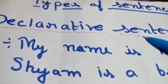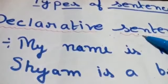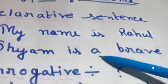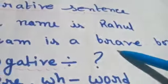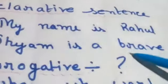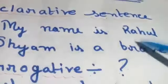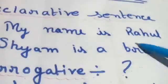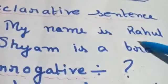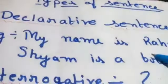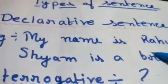In a declarative sentence, for example: 'My name is Rahul.' 'Sam is a brave boy.' These are examples of the declarative sentence. We have given a statement, so it is also called a statement.